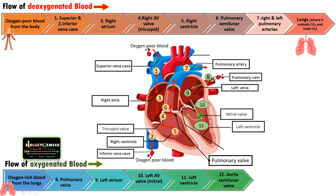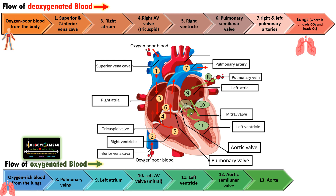The mitral valve prevents the back flow of blood from the left ventricle to the left atria. Then from the left ventricle, blood moves through this aortic valve to the aorta. From the aorta, oxygenated blood is transferred to different parts of the body where it unloads oxygen and loads carbon dioxide.